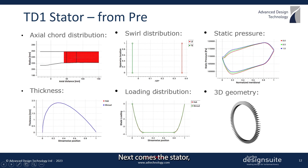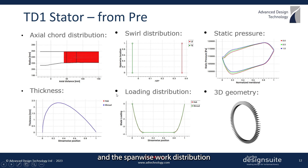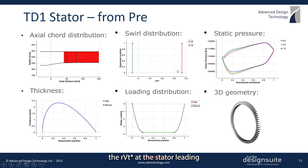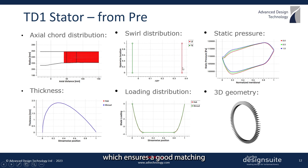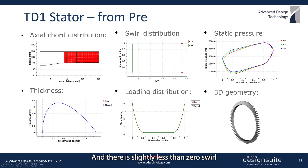Next comes the stator, and again all these settings automatically come from the mean line cord. The spanwise work distribution is again free vortex, and as we can see here the RVT star at the stator leading edge is kept close to the rotor trailing edge value, which ensures good matching between them automatically. There is slightly less than zero swirl at the trailing edge in order to compensate for viscous deviation.